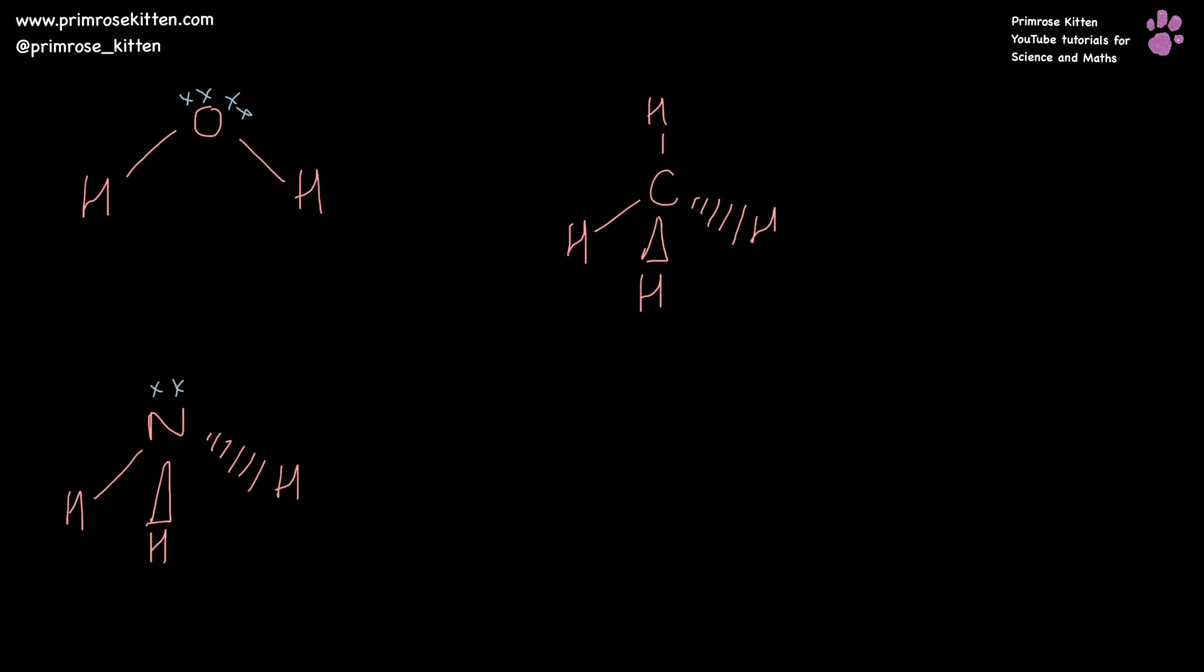And these lone pairs have a big impact on the bond angle. So in a tetrahedral molecule, where we have just the elements involved to look at, in a tetrahedral molecule we get a bond angle of 109.5 degrees.